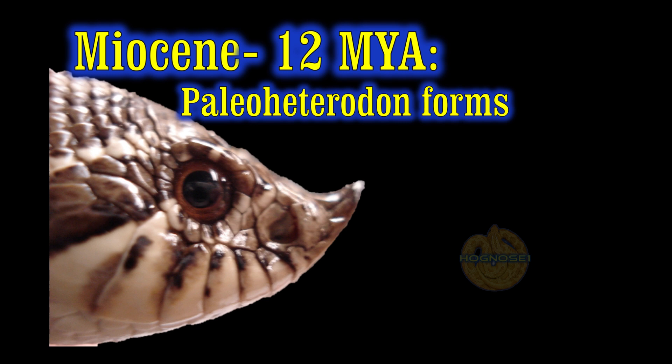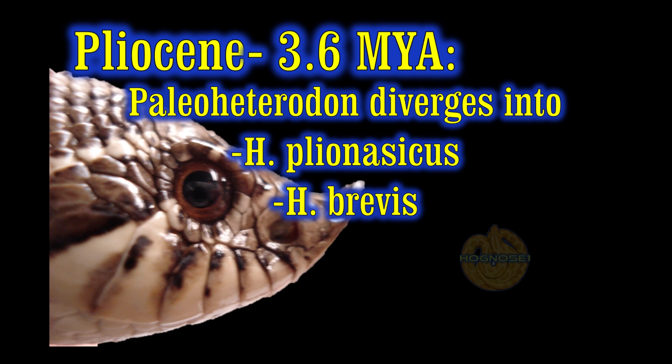That was 12 million years ago. As we move forward into the Pliocene, 3.6 million years ago, we see two different branches emerge from one — paleoheterodon branches into two different types. The two types were Heterodon brevis, which later became the eastern hognose snake, and Heterodon plionasicus, which is the direct descendant of paleoheterodon and the direct ancestor of what we now know as nasicus.